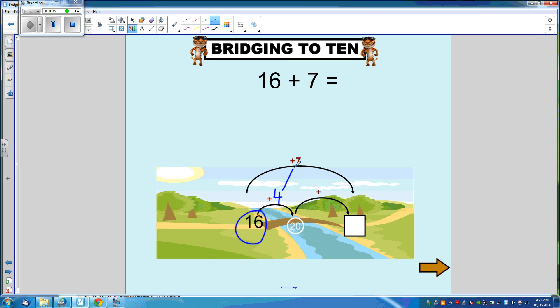4 plus what equals 7? 4 plus 3 equals 7. So we're at 20. 20 plus 3 equals 23. So our answer to 16 plus 7 is 23.